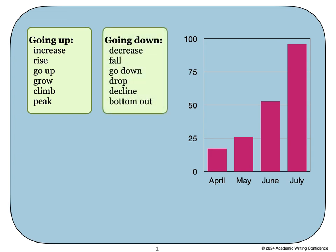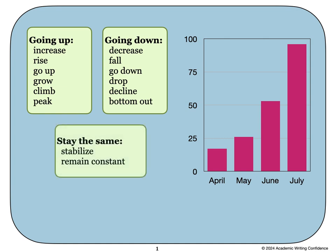If you want to describe things that are going down, you can use these words: decrease, fall, go down, drop, decline, bottom out. When describing information that is staying the same, we can use words such as stabilize or remain constant.